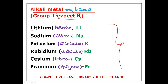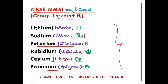The Alkali Metals are: Lithium (Li), Sodium (Na), Potassium (K), Rubidium (Rb), Cesium (Cs), and Francium (Fr). These are all Group 1 elements except Hydrogen. Note that Sodium is Na and Potassium is K — these two codes are different from their element names.